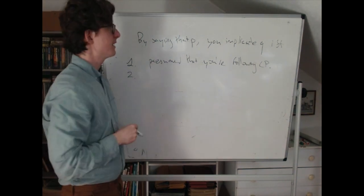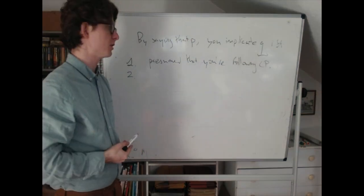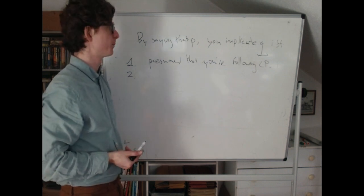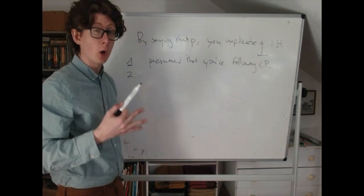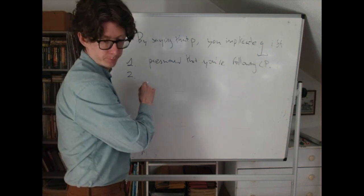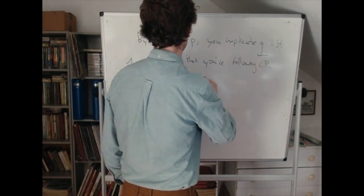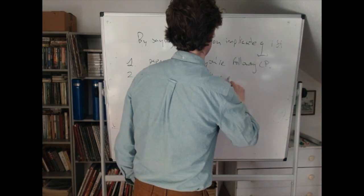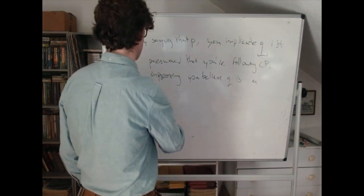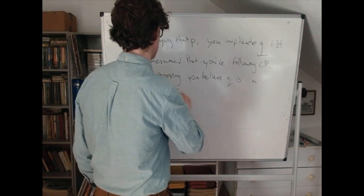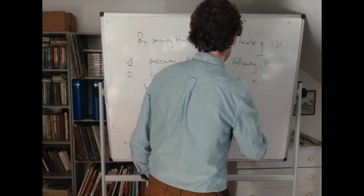The second condition is that the implicature Q — whatever you implicate — is a good way to ensure that the sum total of what you said is in line with the cooperative principle. Supposing that what you really meant to say in addition was Q is a good way to ensure you're following the cooperative principle, to explain how you really are being cooperative in the end. So supposing you believe Q is a way to ensure you're following the cooperative principle.